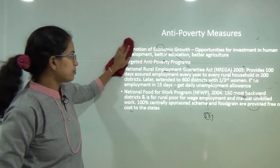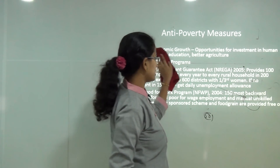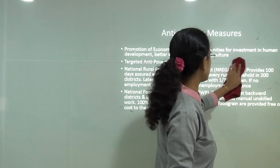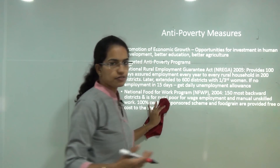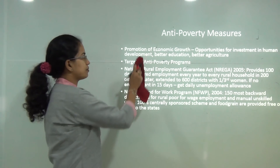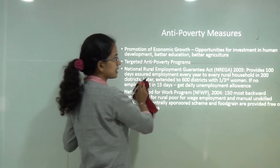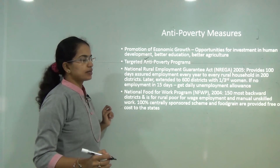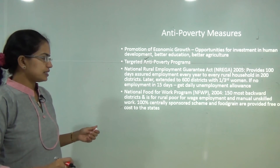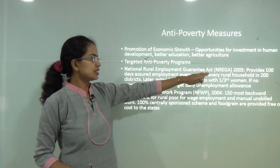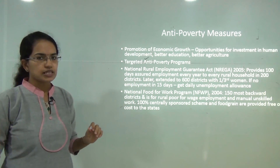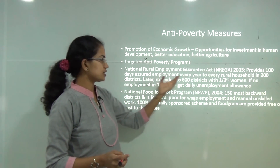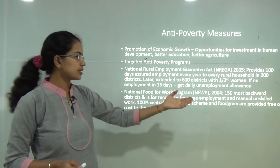Anti-poverty measures are the next focus. The best way is to provide employment — employment security brings economic growth and gets people out of the poverty trap. Better education, better agriculture, and more investment in human resources are required. Programs include the NREGA (National Rural Employment Guarantee Act), which provides 100 days of guaranteed employment to every rural household across 200 districts, later extended to 600 districts. If employment is not provided within 15 days, a daily unemployment allowance is given.